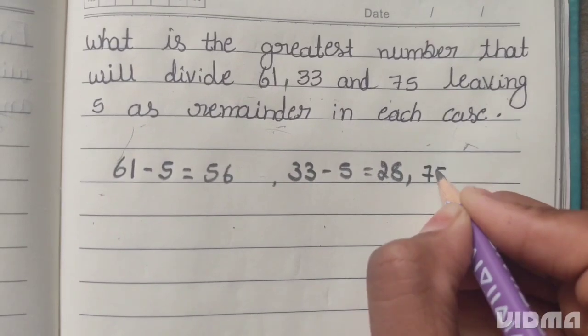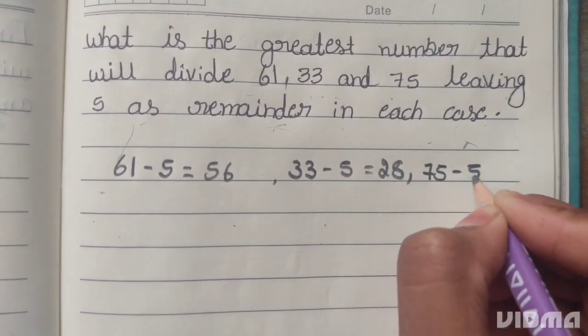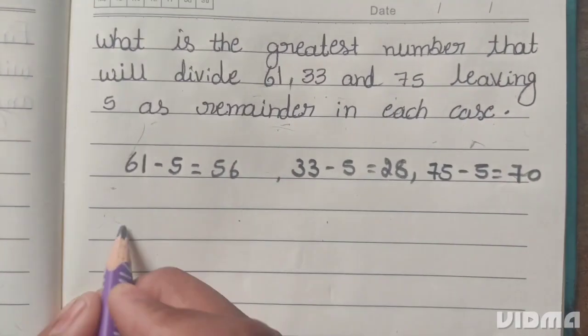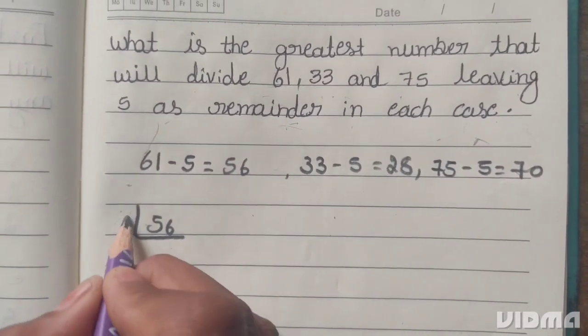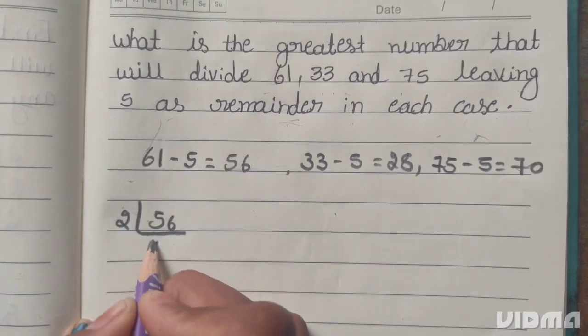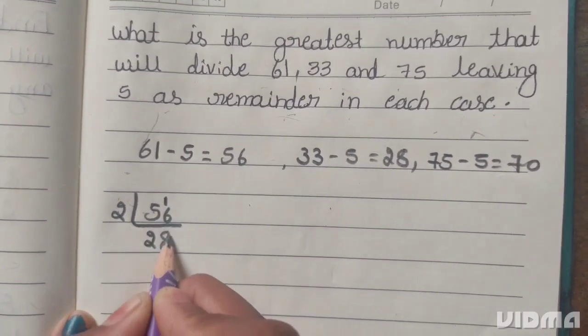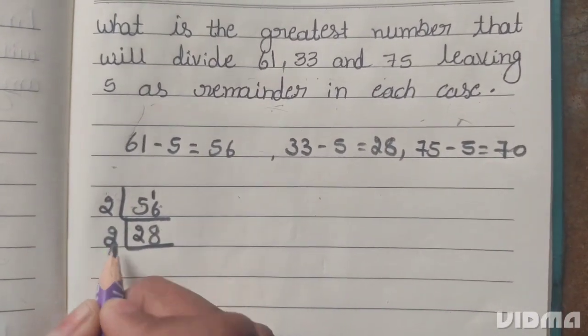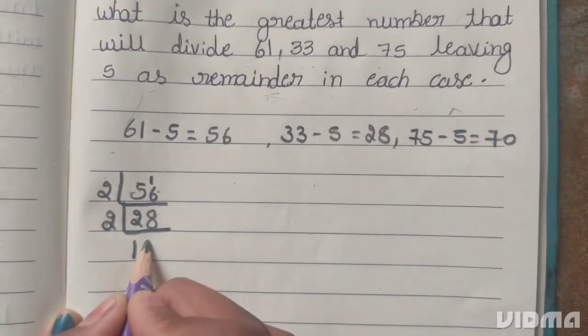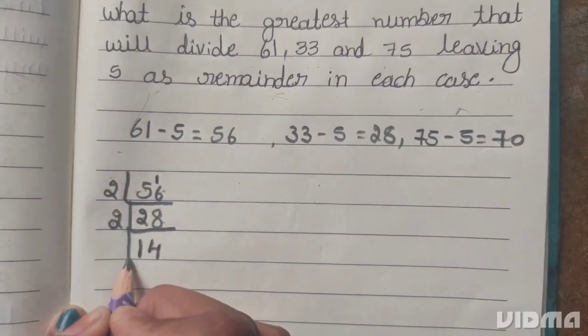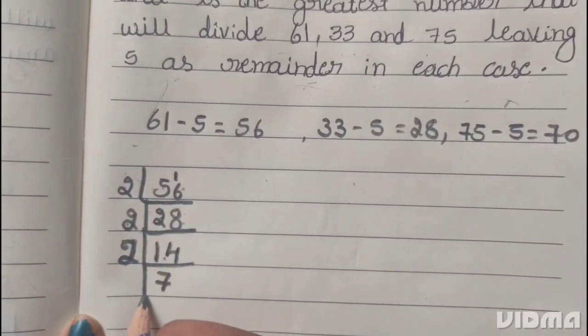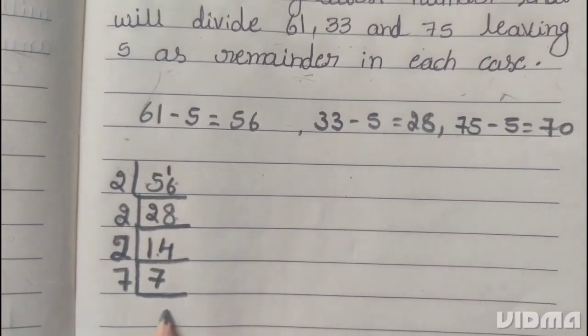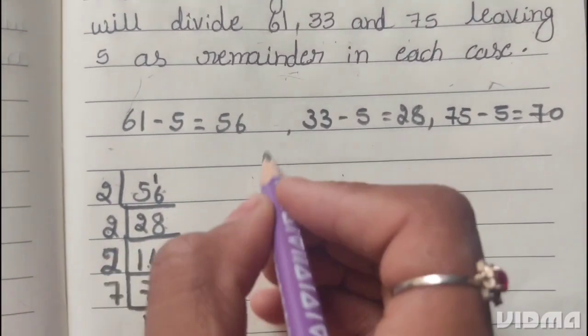75 subtract 5 equals 70. First we do 56. 56 is divisible by 2, giving 28. 28 is divisible by 2, giving 14. 14 is divisible by 2, giving 7. 7 is prime number, it divides itself. So 56 = 2 × 2 × 2 × 7.